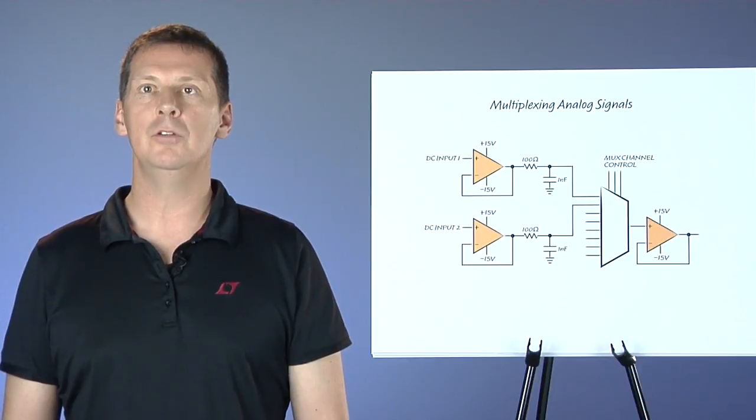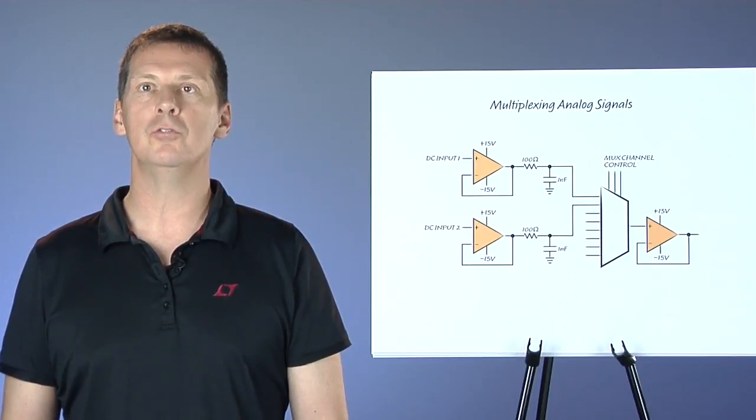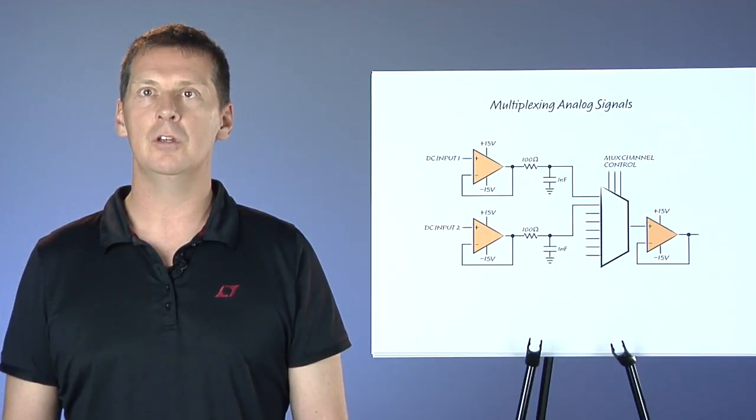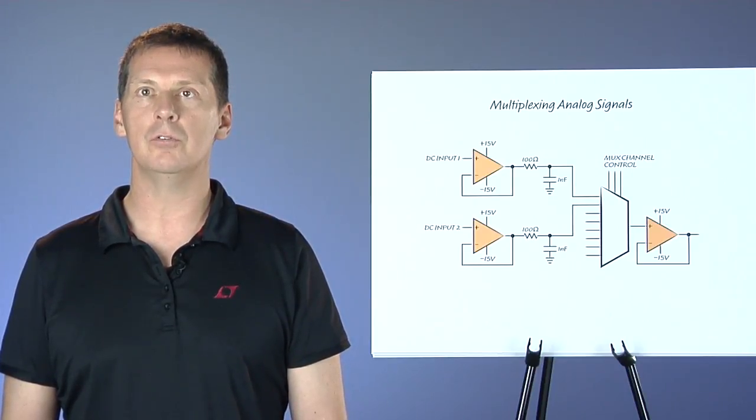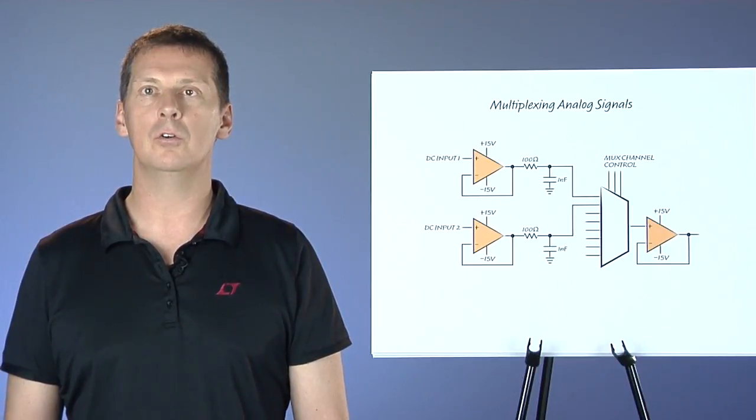If your system needs to measure many analog voltages, but not necessarily all at the same time, then a common approach is to multiplex these signals together into one output signal, so that you can then process and digitize each of these original voltage levels one at a time using shared circuitry. The obvious benefit is that this reduces the size and cost of the downstream components, because you do not need a complete measurement channel for each input signal.